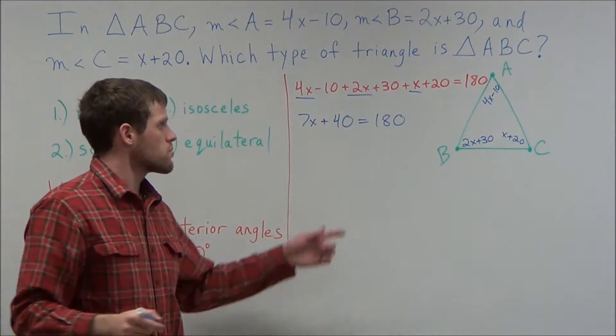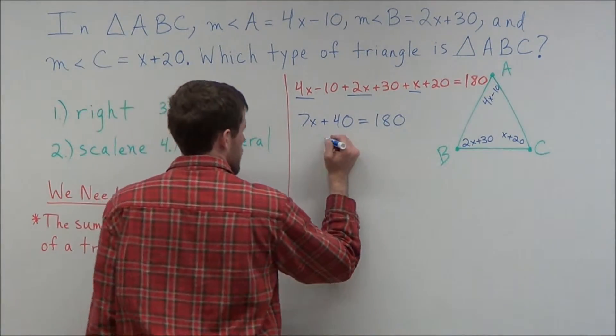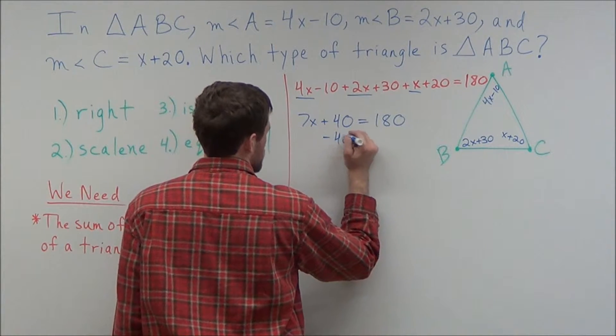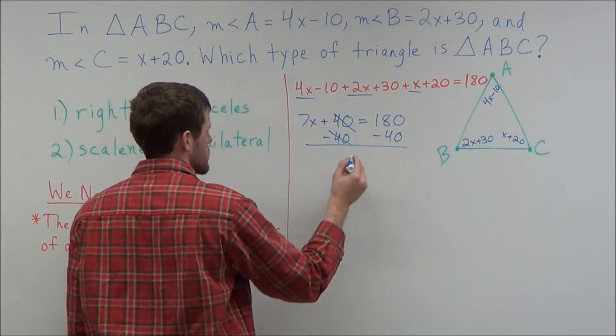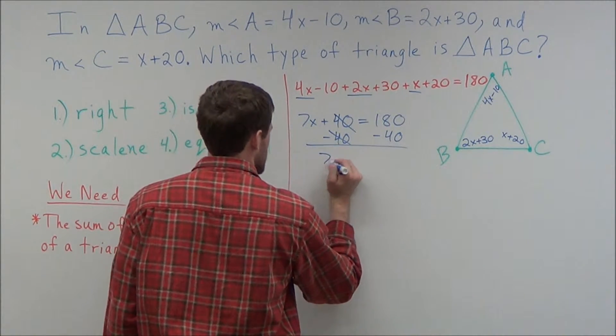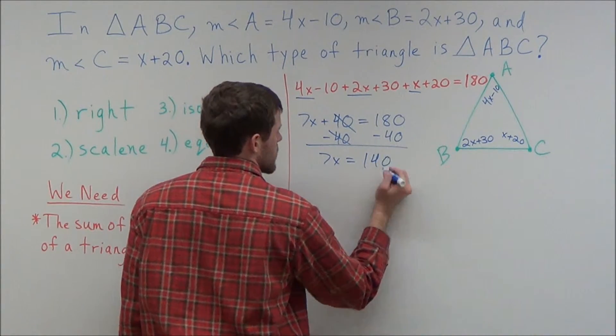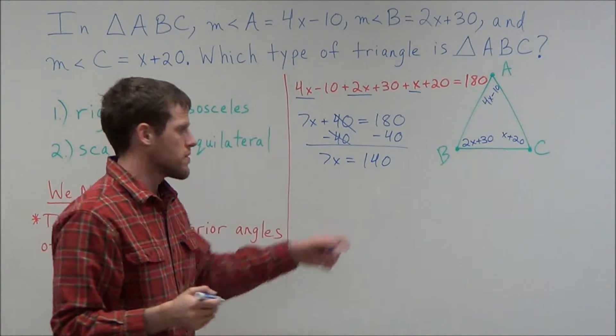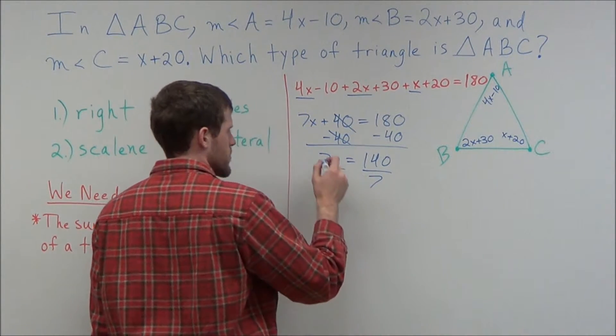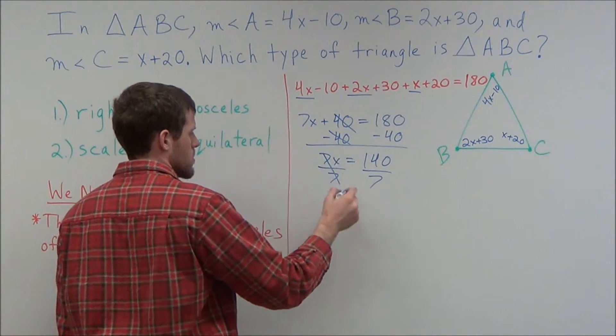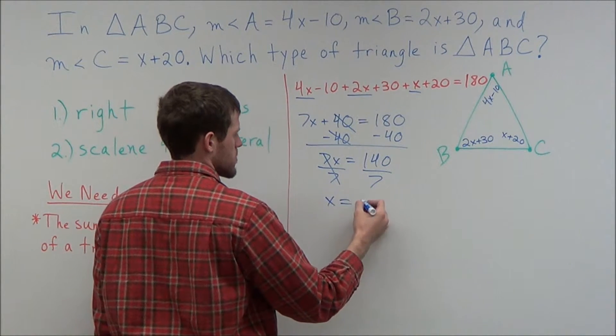So now to solve for x, what we need to do is we can subtract 40 from both sides of this equation. So we subtract 40 from both sides. 40 minus 40 cancels. And we have 7x equals 180 minus 40 is 140. So now to get x by itself, we divide both sides by 7. 7 divided by 7 cancels. Leaving us with x equals 140 divided by 7 is 20.